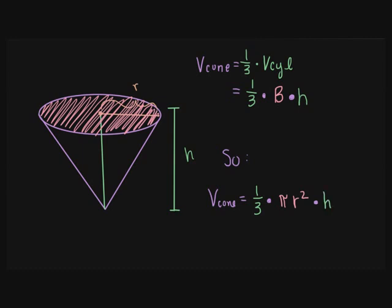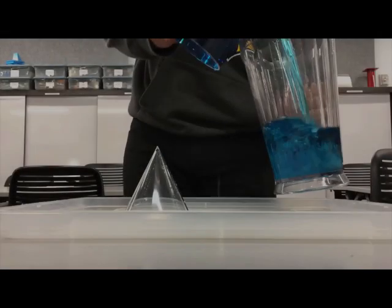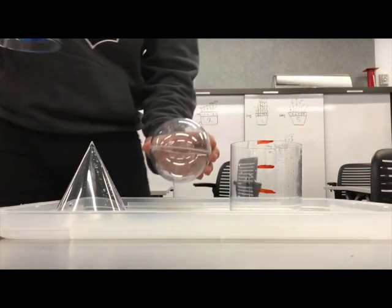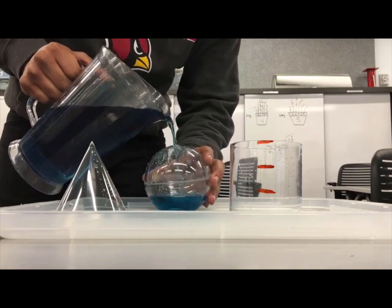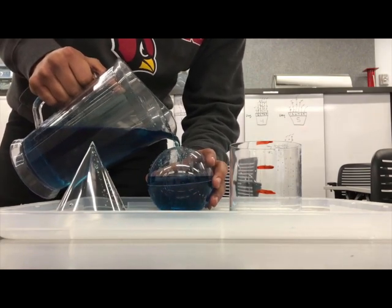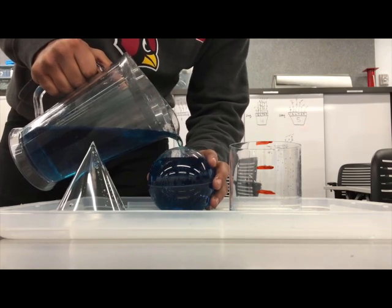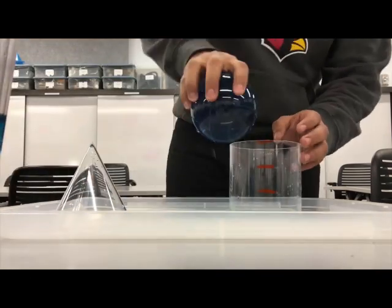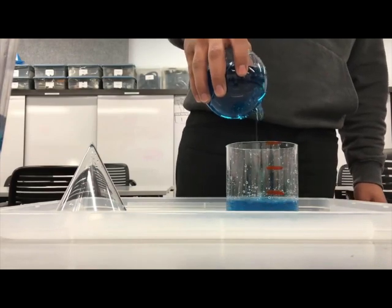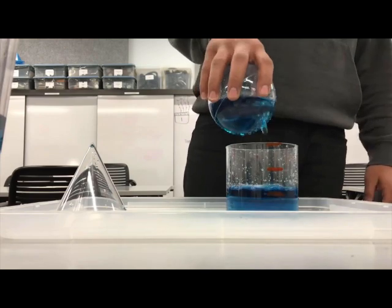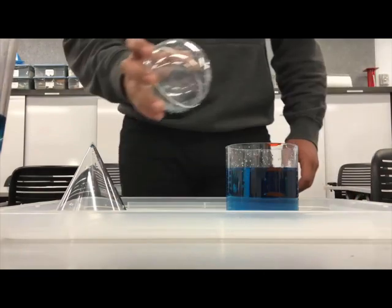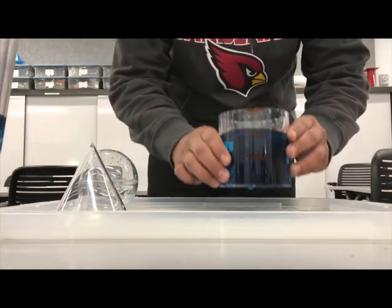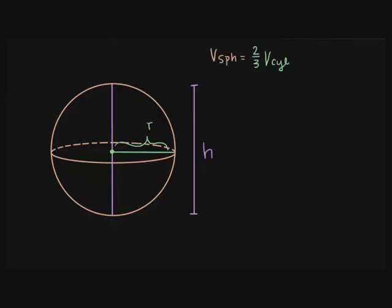Now let's look at the relationship between spherical and cylindrical volumes. We see that the sphere's volume is actually two-thirds the volume of the cylinder.